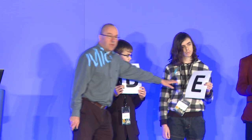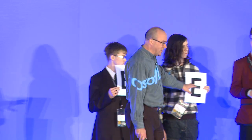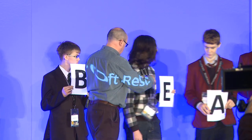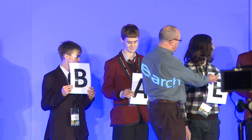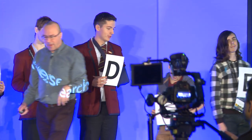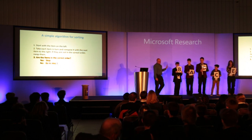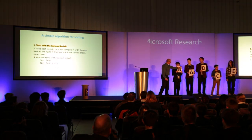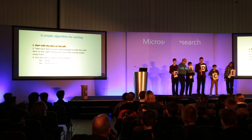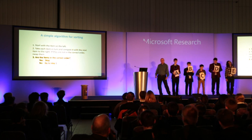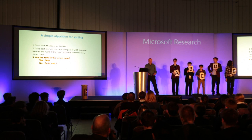Taking each item in turn: these are in the correct order, so we do nothing. These are not in the correct order, so we swap them. Next two items — not in the correct order, swap. Last two — not in the correct order, swap. That's step two. Now step three: are these now in the correct order? No, they're not — so we go back to step one. After another pass with further swaps, we reach step three again: A, B, C, D — yes, they are sorted. And so we're finished. That's an algorithm.